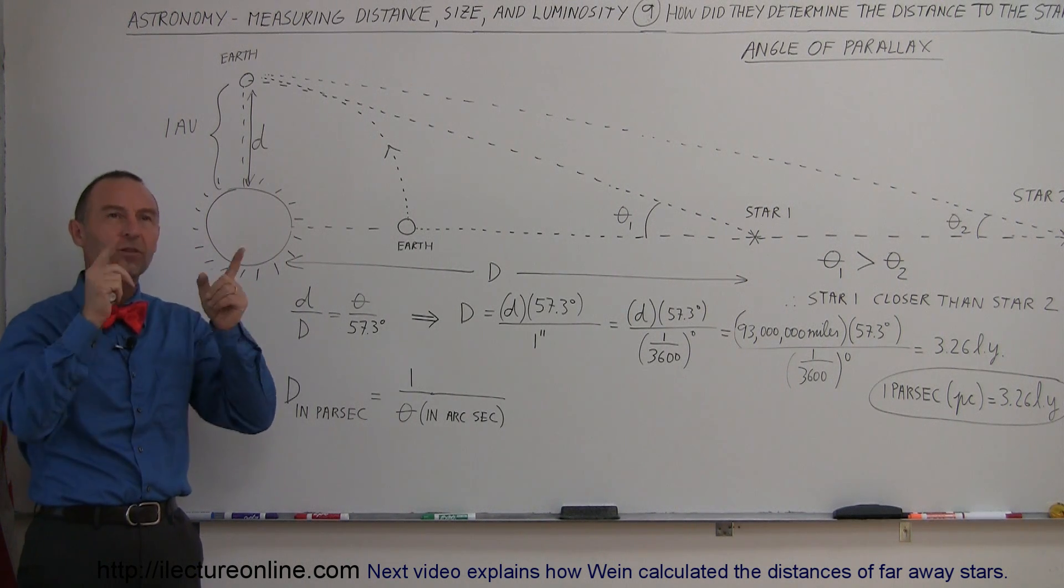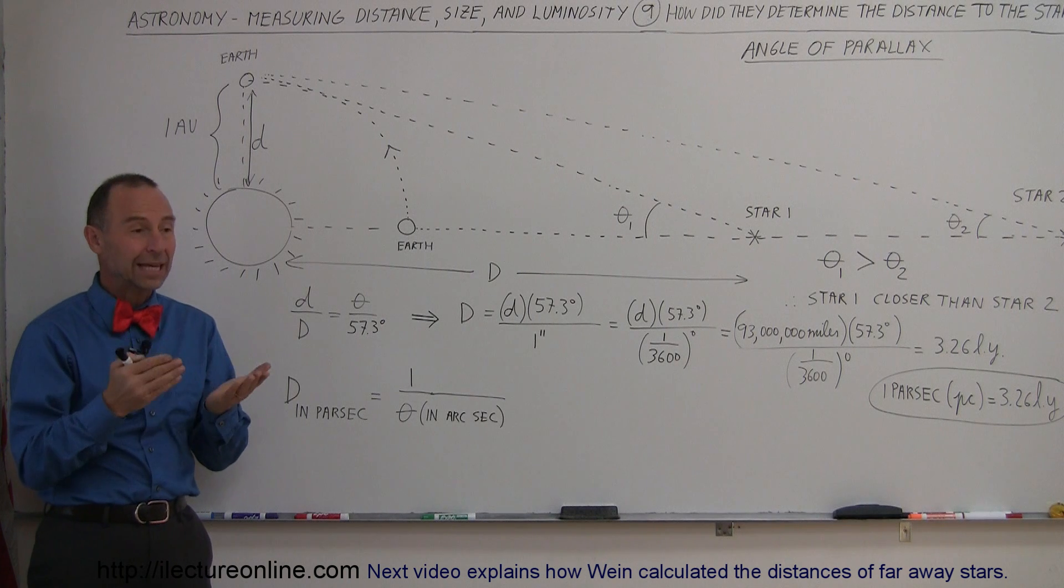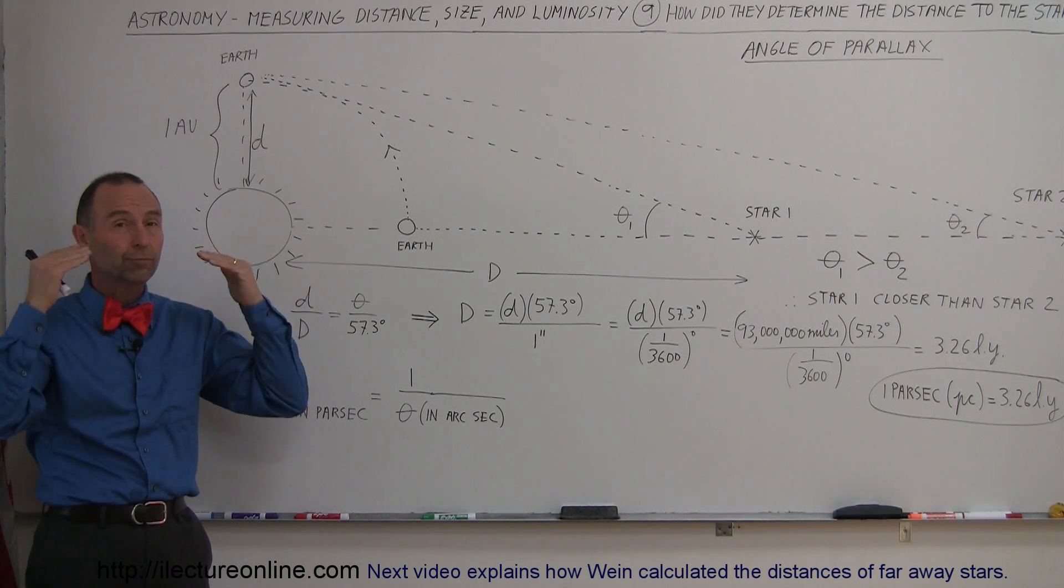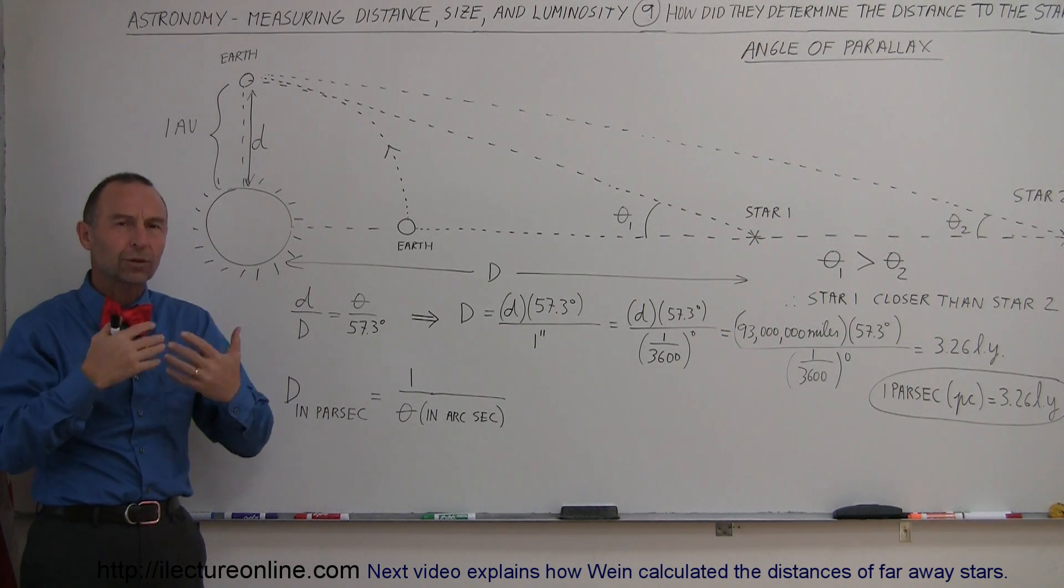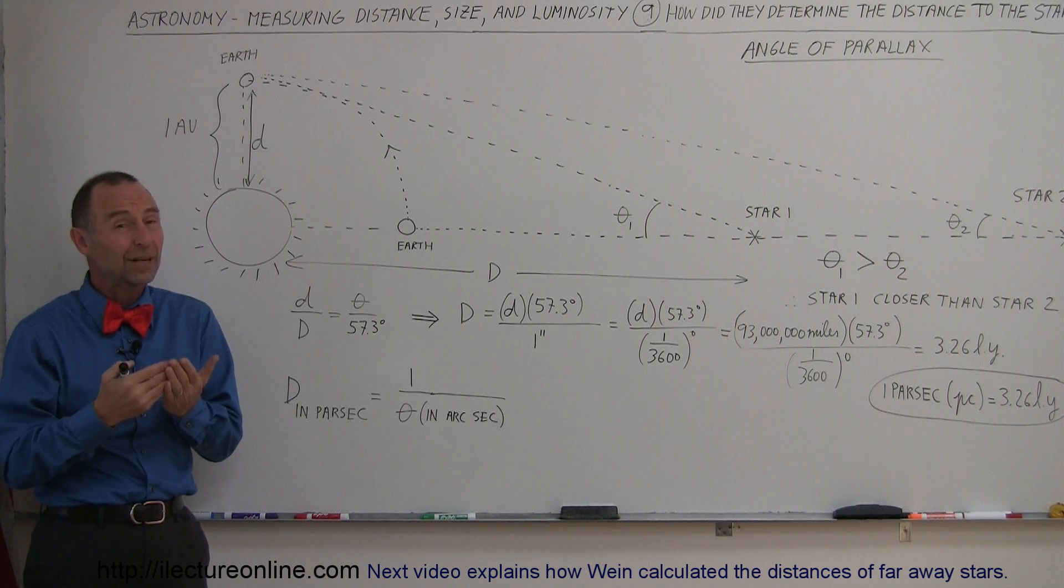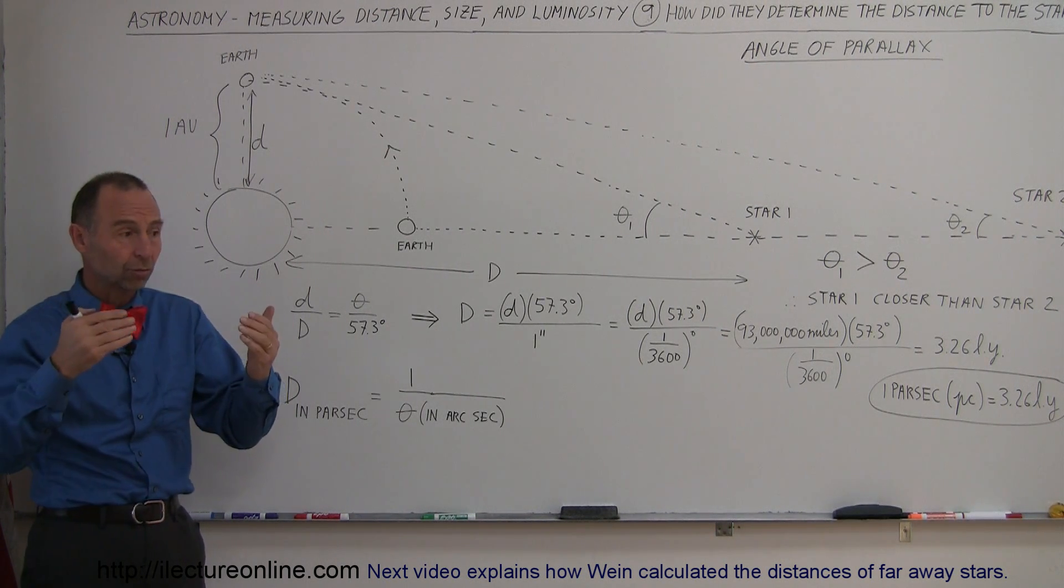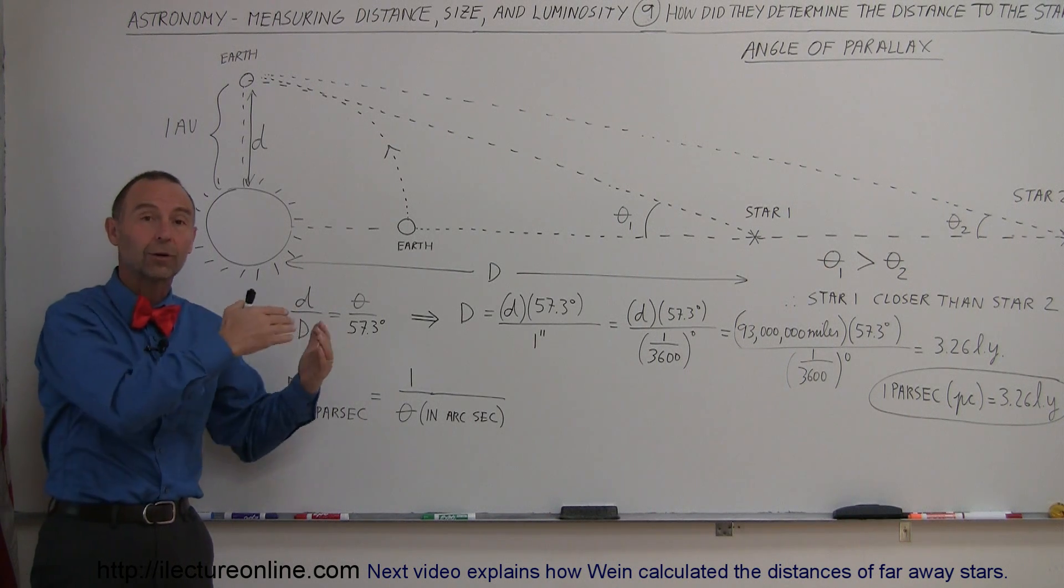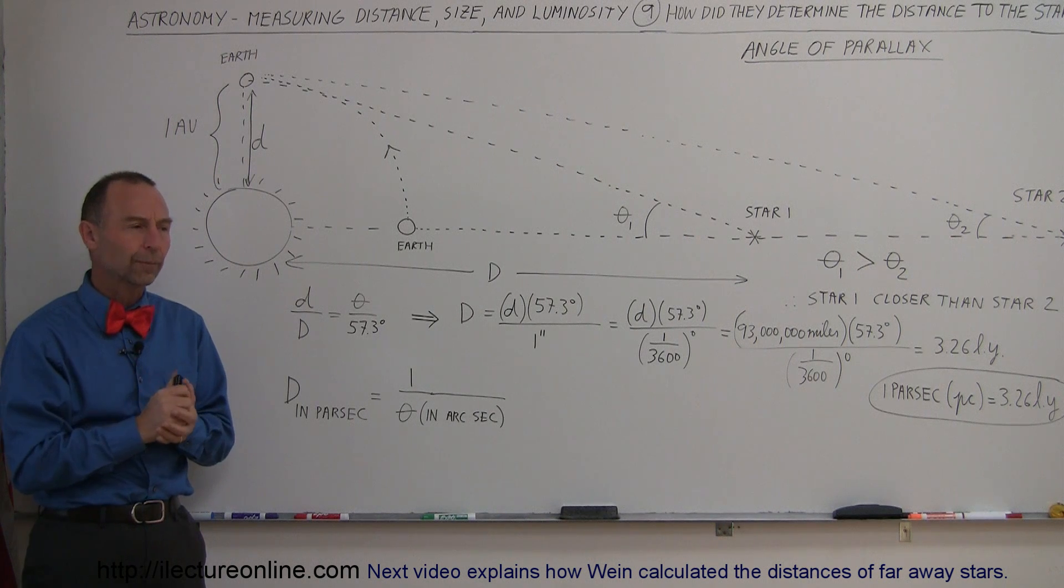But now they looked up to those points of light, the stars. Back in the days of Copernicus when he concluded that those stars were much farther away than the planets, they began to wonder: how far are those stars? How can we find the distance to those stars? They really didn't have any idea what they were. They didn't realize at the time that those stars were just basically other Suns, like our own Sun, just much farther away. But they still wanted to know how far those stars were.